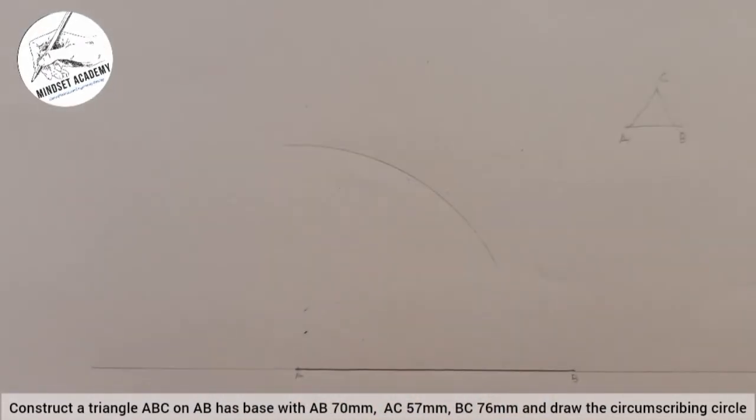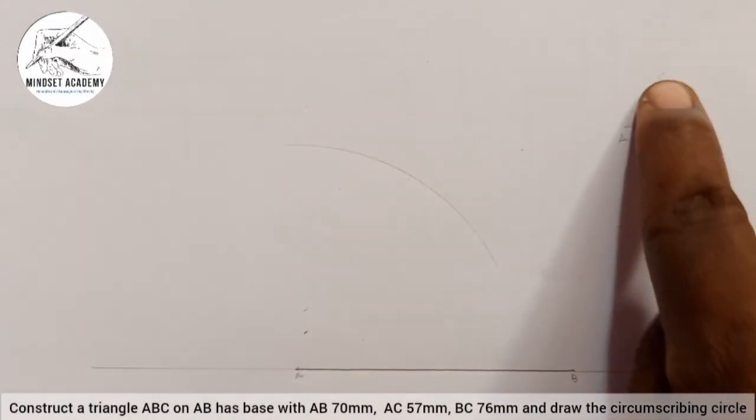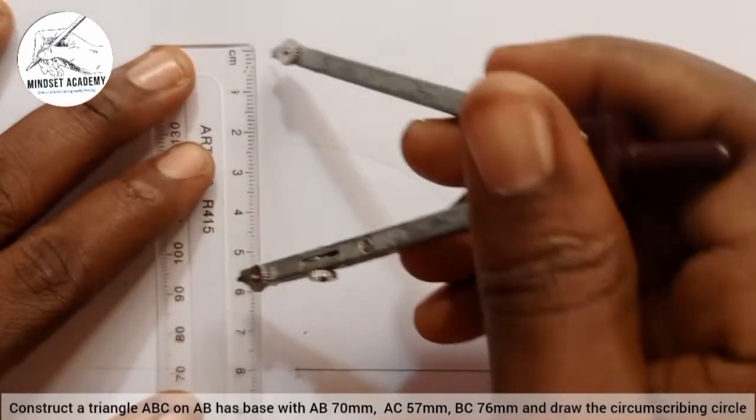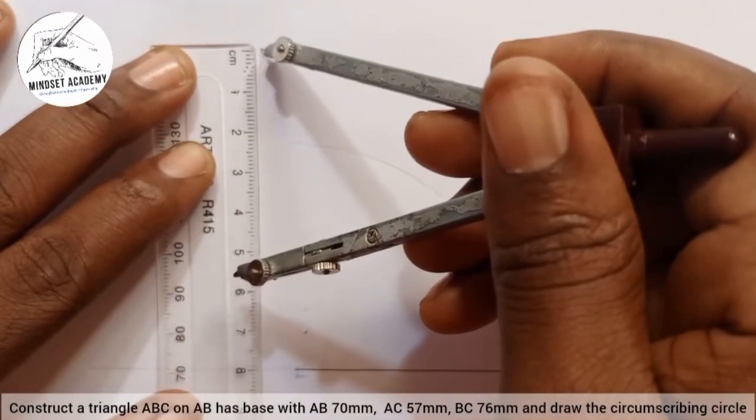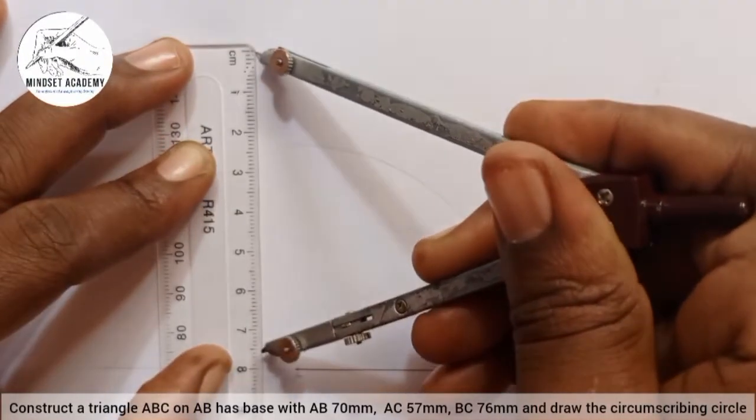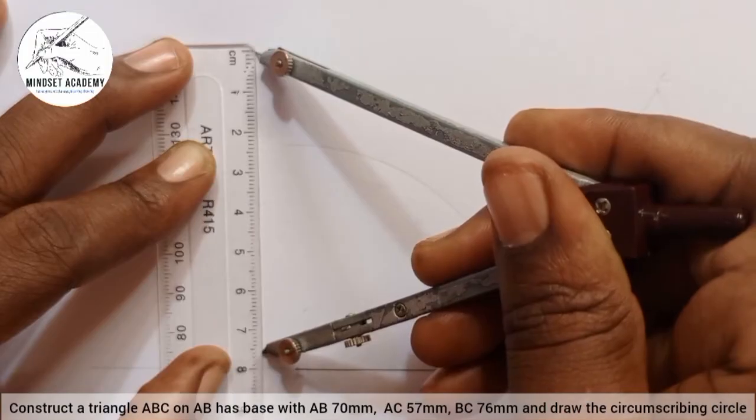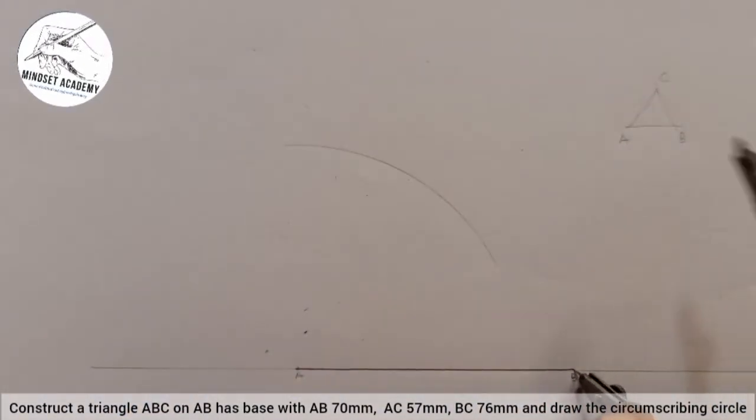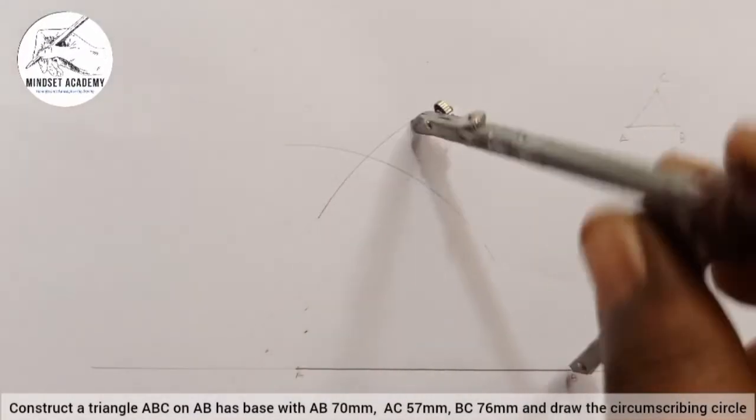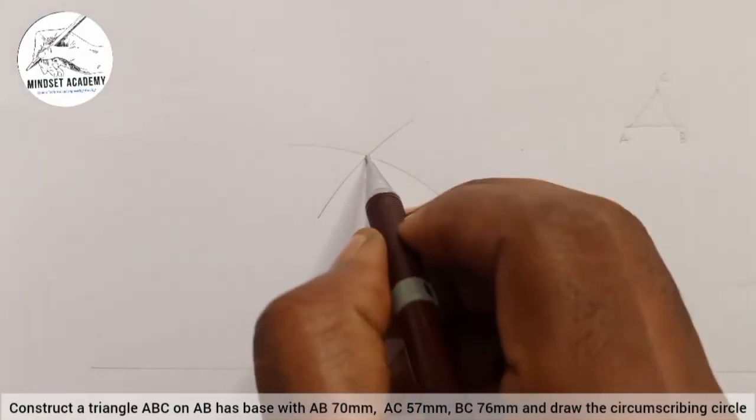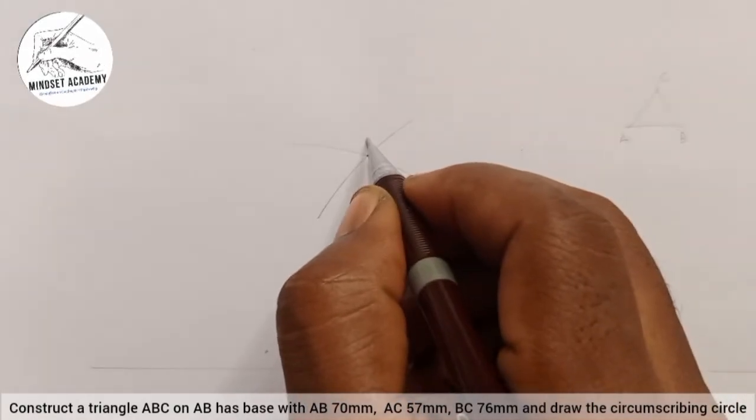Now the next thing is BC which is 76. So I am going to measure 76 on my meter rule this way. This is 76 here, 75, 76. And I will place it at B. And I will strike another arc. So where the arc intersects the previous arc, that will give me my point C.